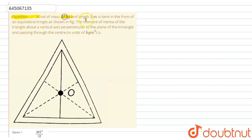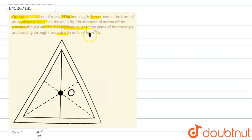Hello students. The question is: a rod of mass M kg and length L meter is bent in the form of an equilateral triangle as shown in the figure. The moment of inertia of the triangle about a vertical axis perpendicular to the plane of the triangle and passing through the center, in units of kg·m², is what? Let's look at the solution.